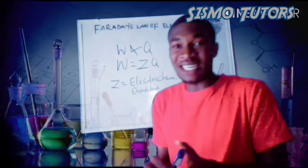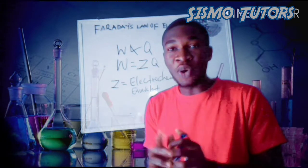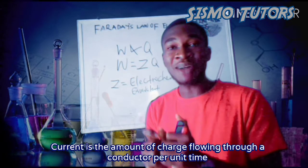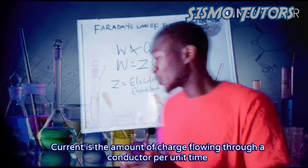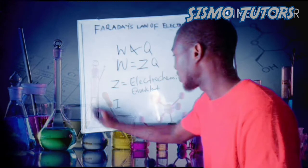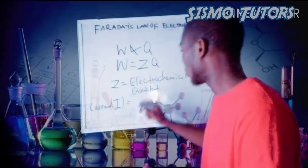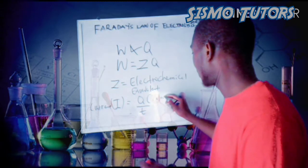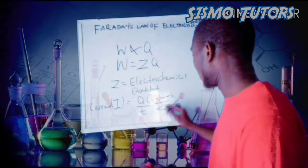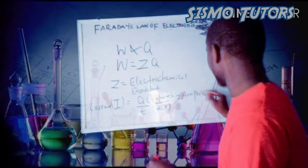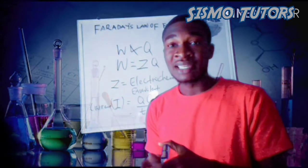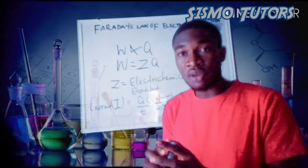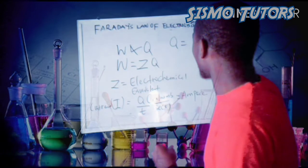Now, how can we calculate the quantity of charge that has been passed into the solution? Once we know the current passed to the solution, we can easily calculate Q, because current is the amount of charge flowing into a conductor per unit time. So current I is equal to the quantity of charge per unit time, measured in coulombs over seconds, which gives us the ampere. So once we know the current and the time, we can calculate Q by making Q the subject: Q is equal to IT.